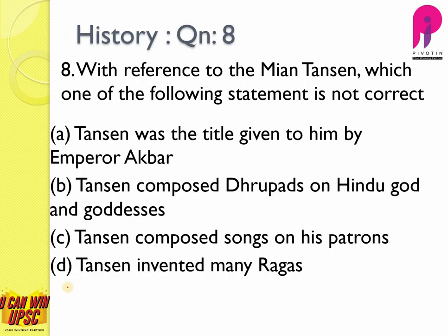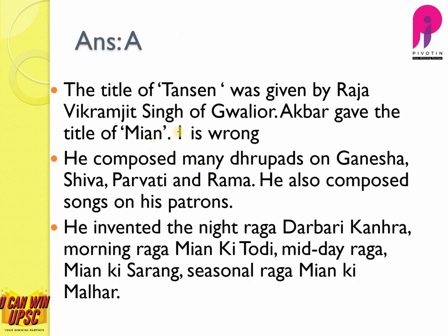Question number eight: with reference to Mian Tansen, which statement is not correct? Tansen was the title given to him by Emperor Akbar — this is wrong, because Emperor Akbar gave him the title of 'Mian,' not 'Tansen.' That is the direct answer since the question asks which is not correct. Tansen composed Dhrupad on Hindu gods and goddesses — this is correct. He composed songs on ragas and invented many ragas. The answer is A. The title of Tansen was given by Raja Vikramjit Singh of Gwalior.